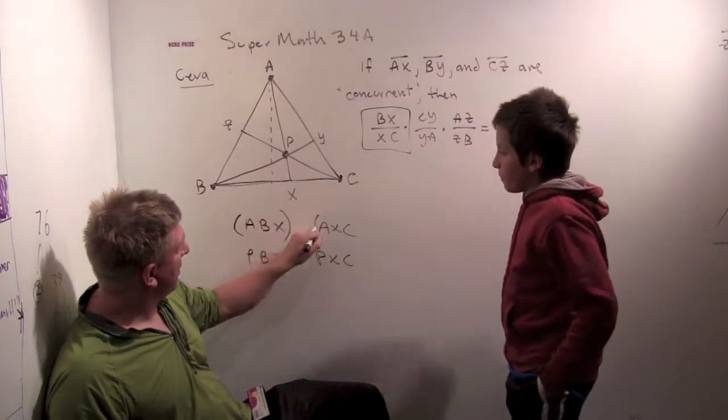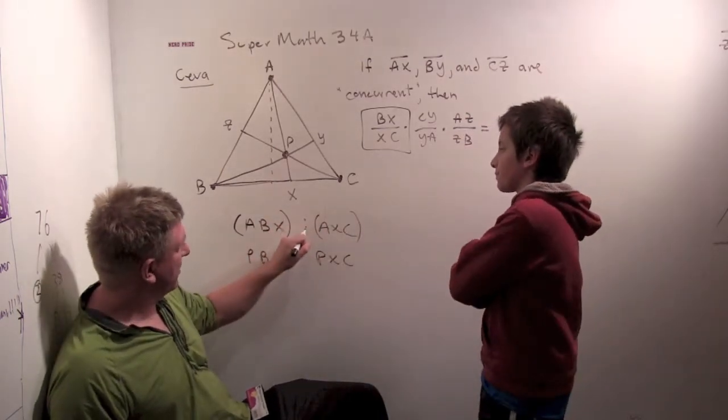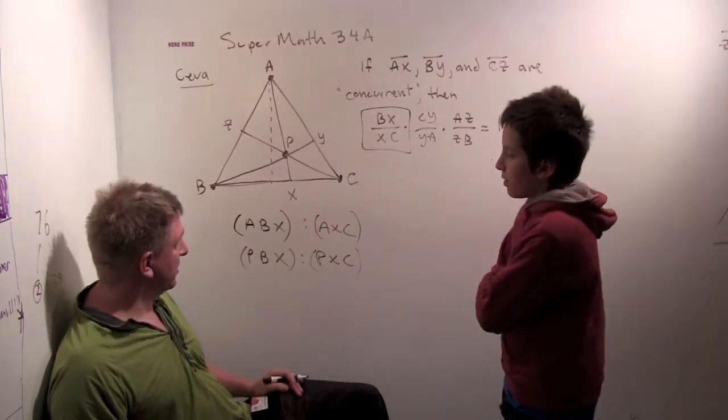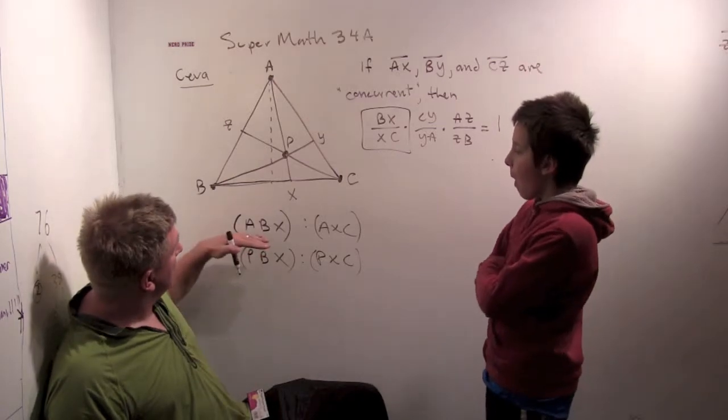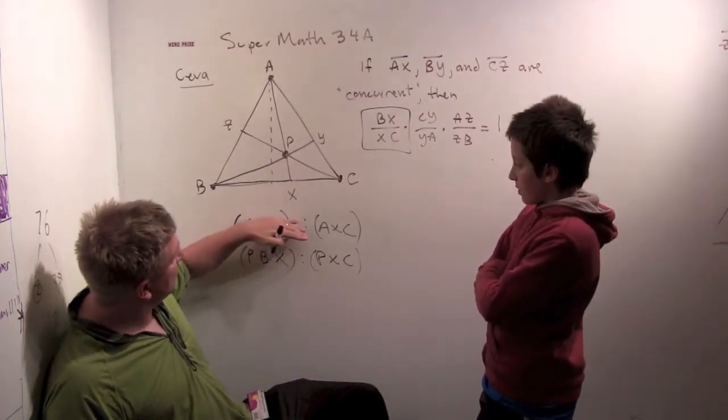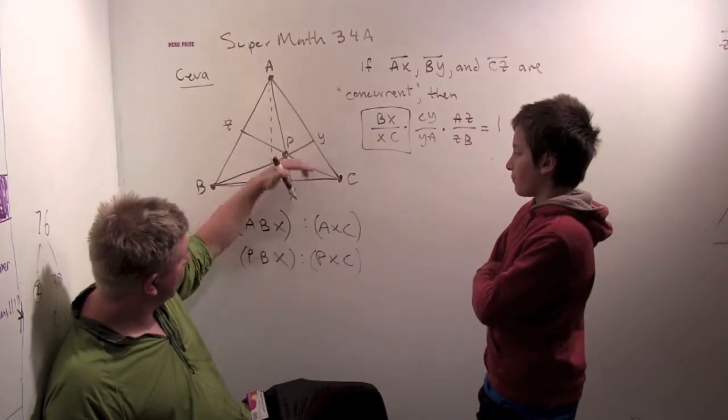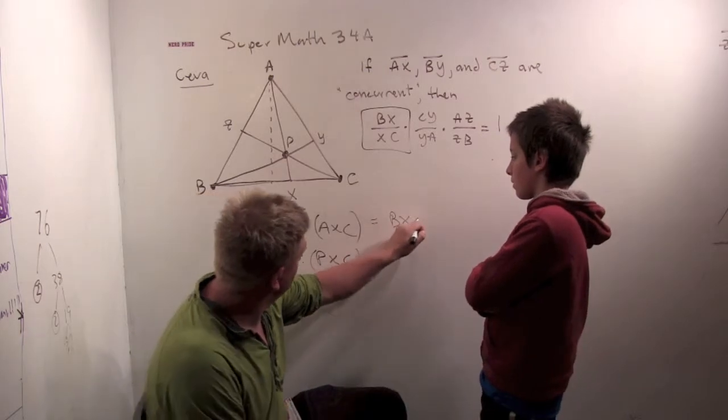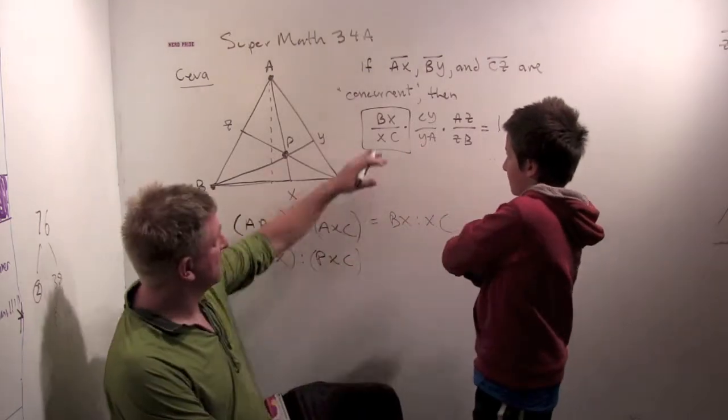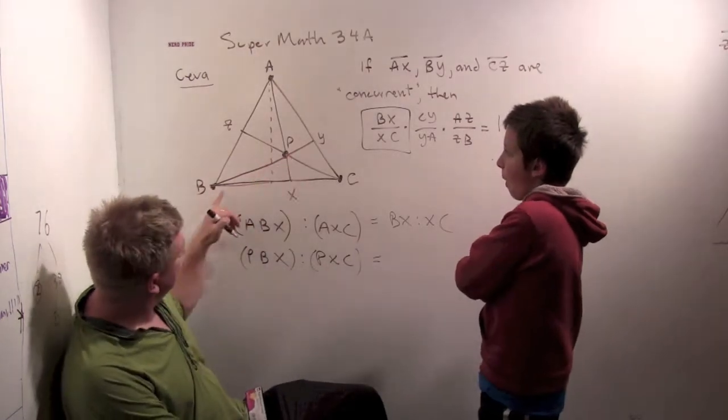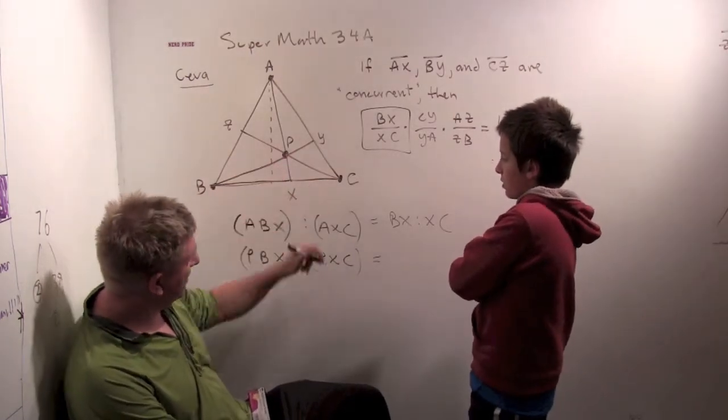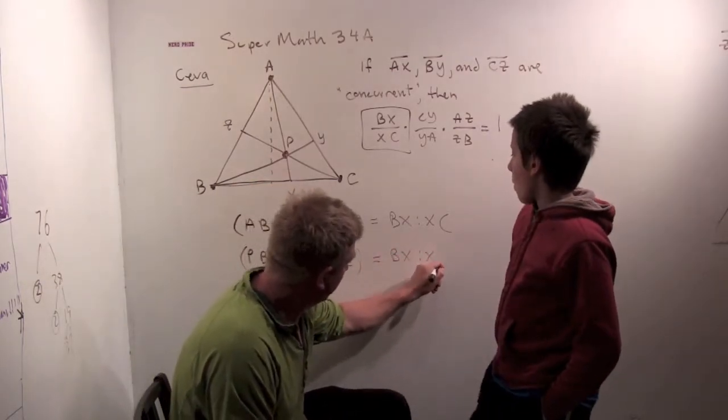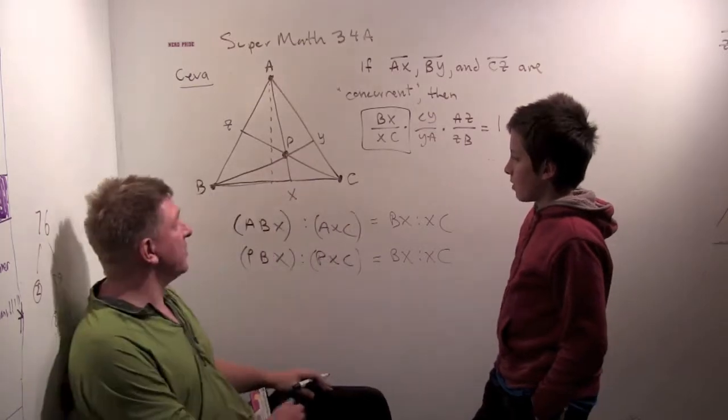I'm going to use a notation for area like this. Just put parentheses on. That means triangle area. Just for what I'm talking about, that's a notation from a book called Geometry Revisited. So the area of triangle ABX to the ratio of triangle ACX equals BX to XC. Which is what we have here. And the ratio of PBX to PXC, those areas of these triangles, also equals BX to XC. And here's the amazing ratio thing.